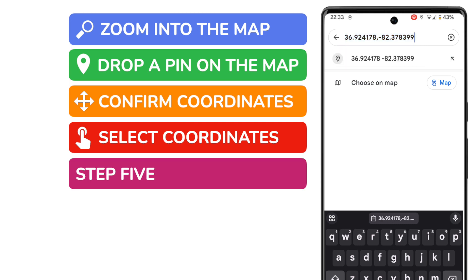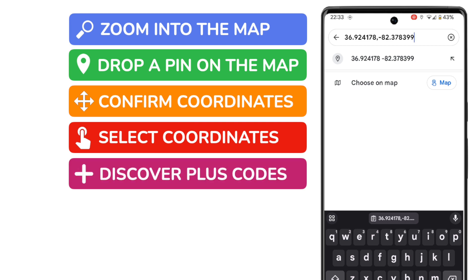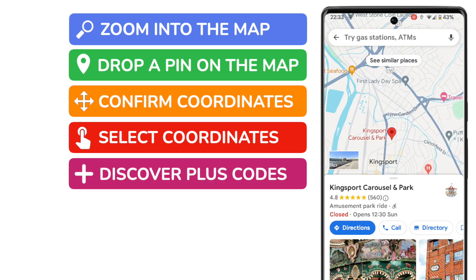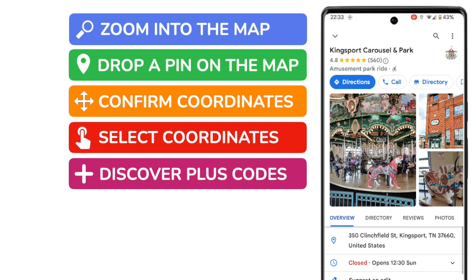Before leaving this guide I also want to show you how to find plus codes on Google Maps. If I return to the map and tap on a location to choose it, I'll then choose to display more information about that location by tapping on the detail bar at the bottom.